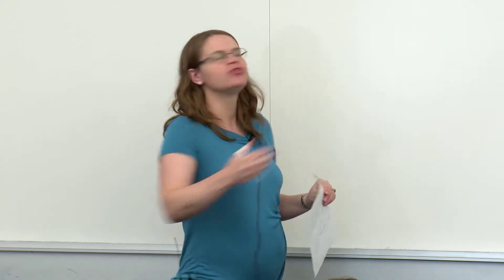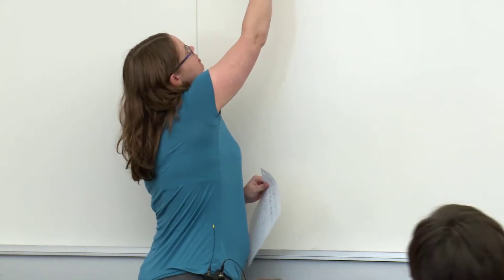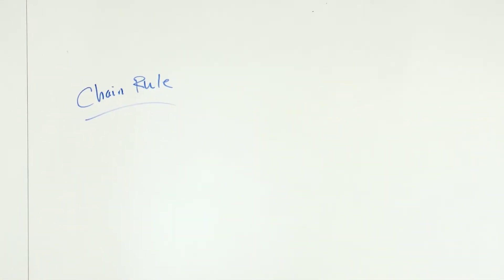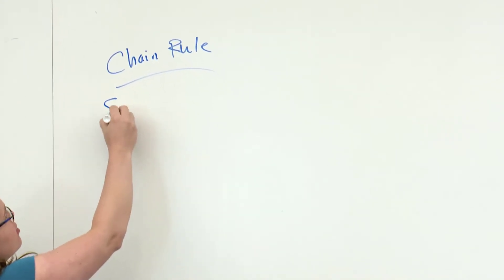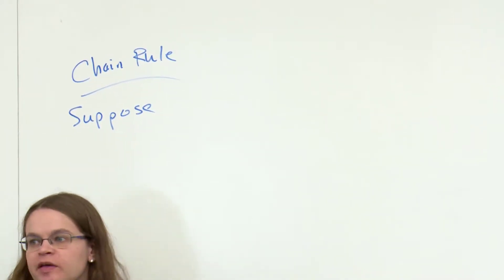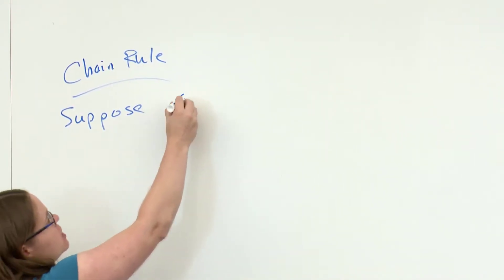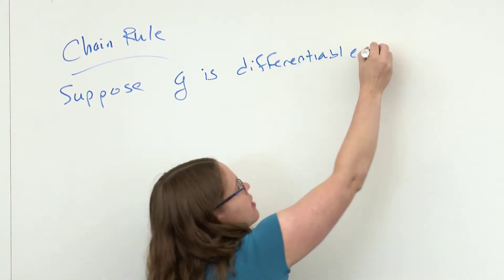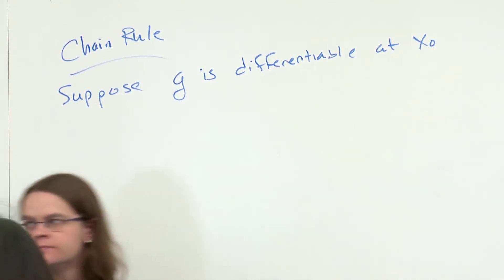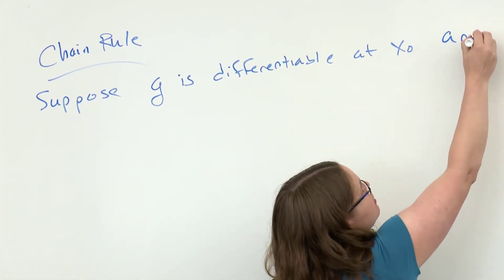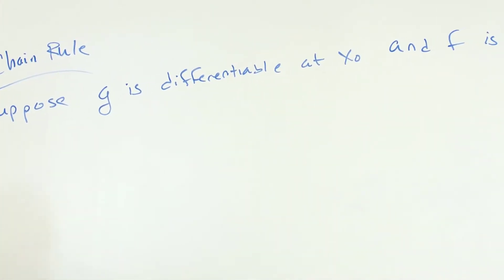The chain rule lets us do really complicated functions without too much work. This is a theorem: suppose we're taking a composition of functions. Suppose g is differentiable at x₀, and then we have another function f which is differentiable at g(x₀).